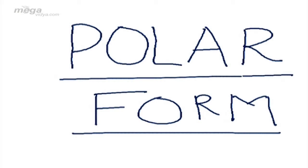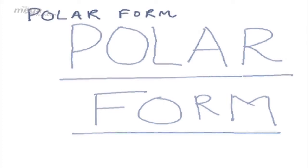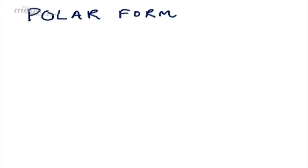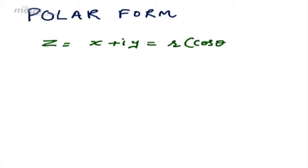Today we will discuss the polar form of the complex number, which is a very important form for solving problems with complex numbers. Suppose z is equal to x plus i y. We can write x plus i y as r cos theta plus i sine theta, which can also be written as r into e to the power i theta.